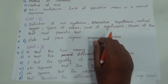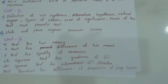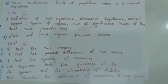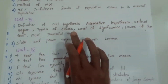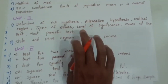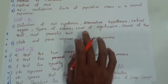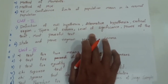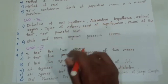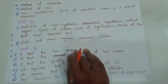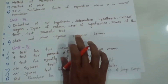Definitions to prepare include: alternate hypotheses, critical region, types of errors, level of significance, power of a test, and most powerful test. Any definitions asked should be prepared.